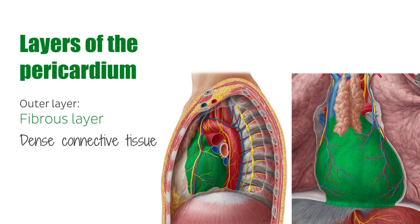The pericardial sac also attaches via ligamentous fibers to the sternum, and due to these attachments, it is affected by the movements of the heart, the great vessels, the sternum, and the diaphragm. This fibrous exterior lining mechanically functions to prevent the heart from overfilling, because the fibrous tissue as a whole is resilient, and although flexible, it does not stretch.